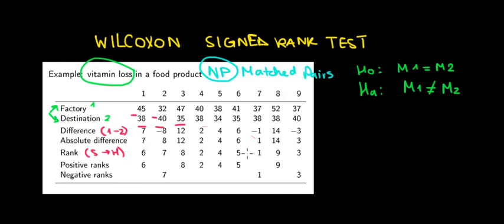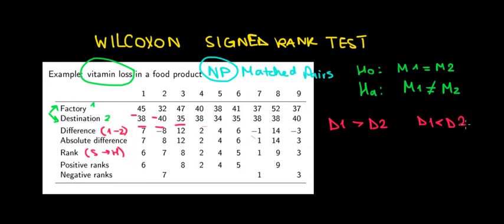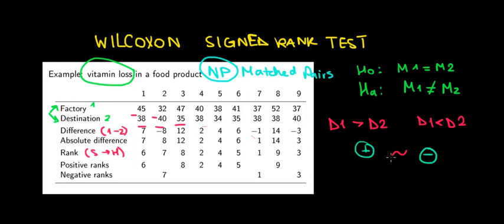The intuition of the Wilcoxon signed rank test is that if the distributions do not differ — if we have the same median values — the differences between them are pretty much symmetric. In some cases the values of the first distribution will be higher; in other cases the values of the second distribution will be higher. Overall, we won't have many net differences. In some cases we'll have positive differences, in some cases negative. If they indeed do not differ a lot, the sum of positive ranks should be pretty much the same as the sum of negative ranks. That's what we are testing.